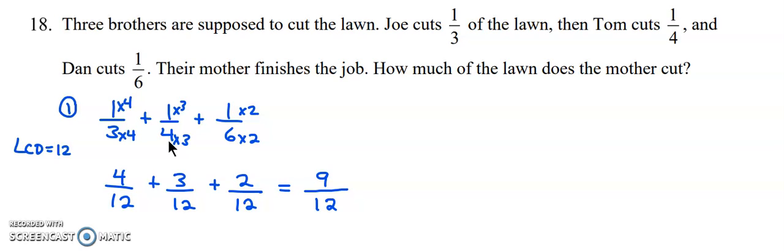And the mother finishes. So for the mother we're going to take the total amount, twelve twelfths, the full lawn, minus what the brothers did, nine twelfths.